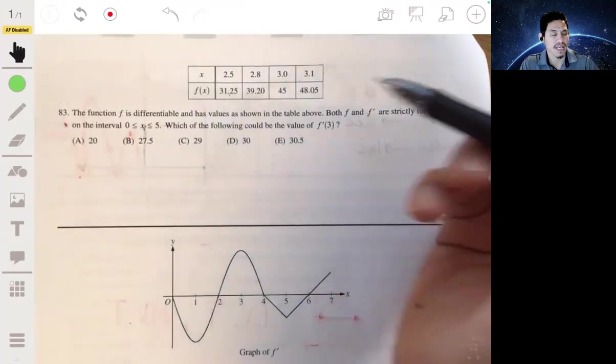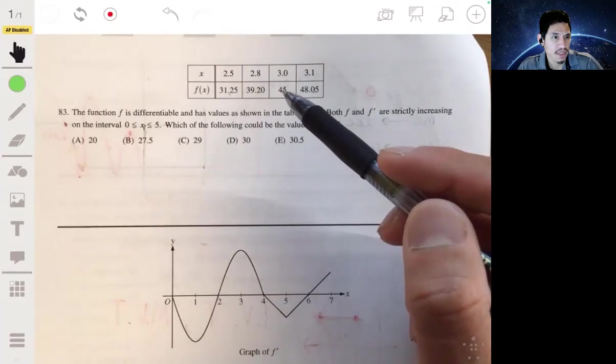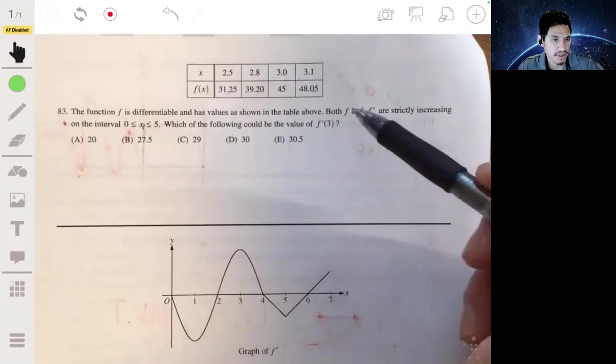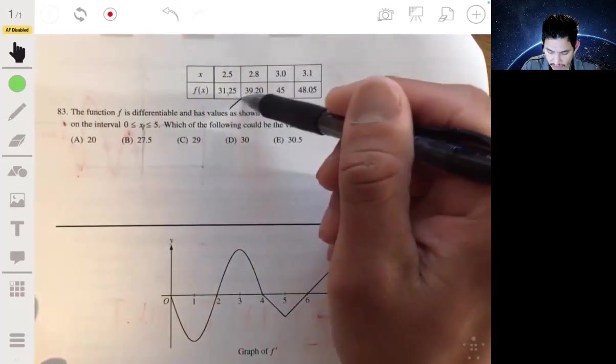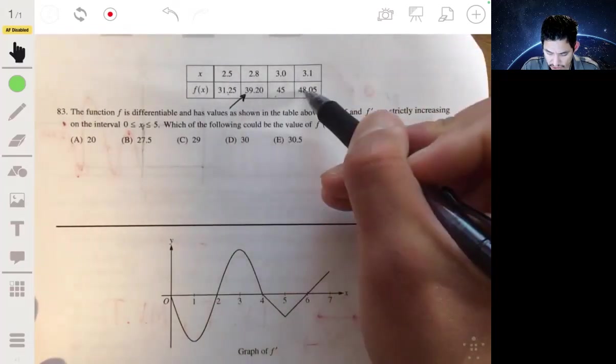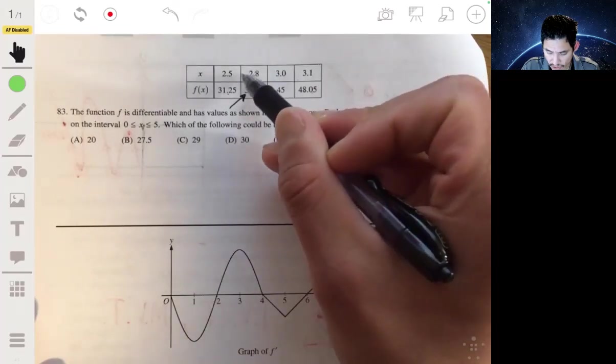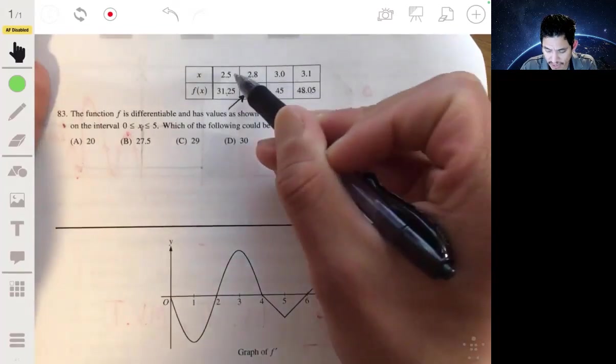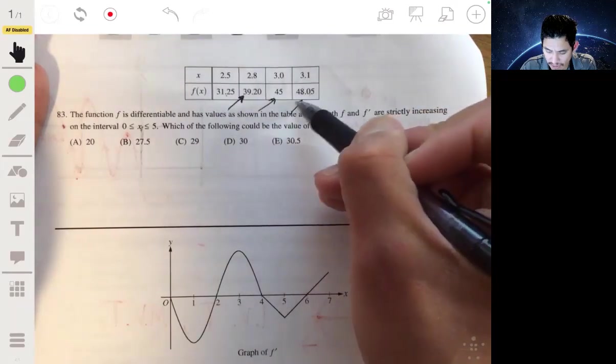Since the derivative is also increasing, that means any slope you find between two points has to get larger and larger. If you find a slope between here and here, the next slope has to be that value or more.